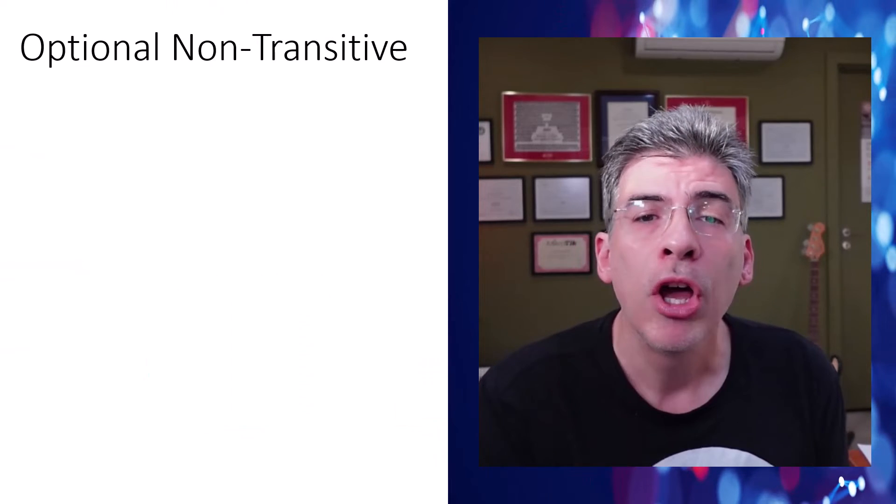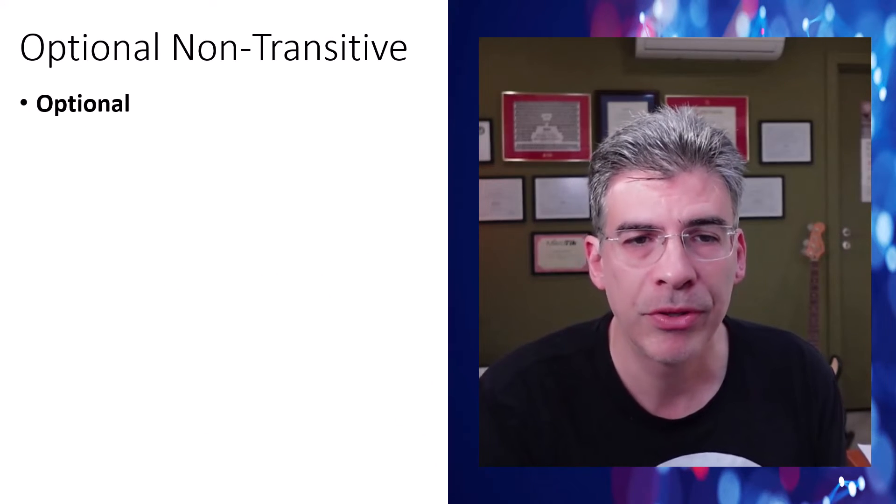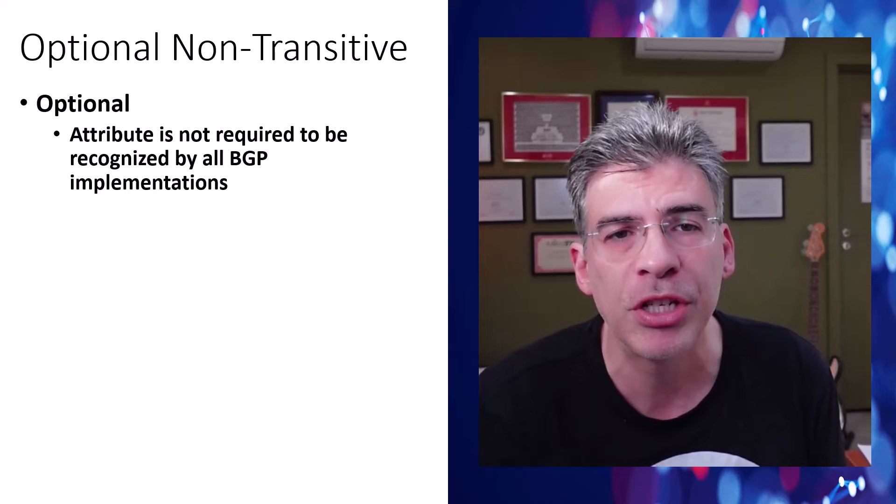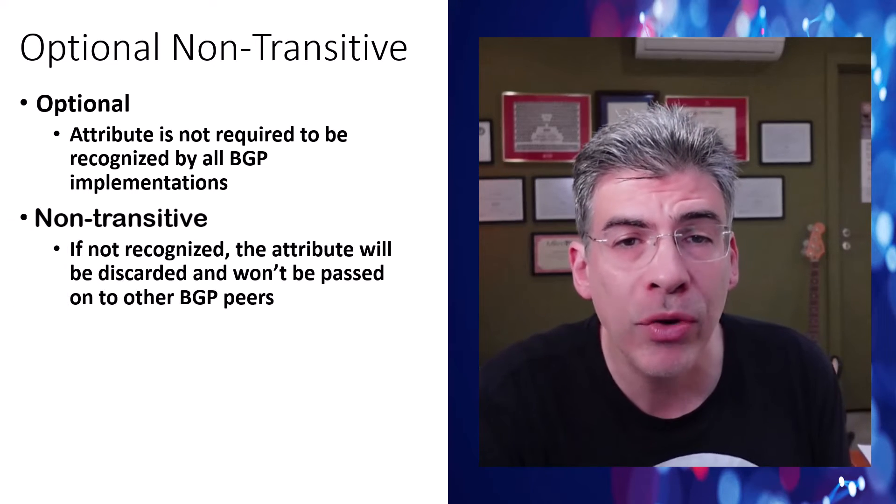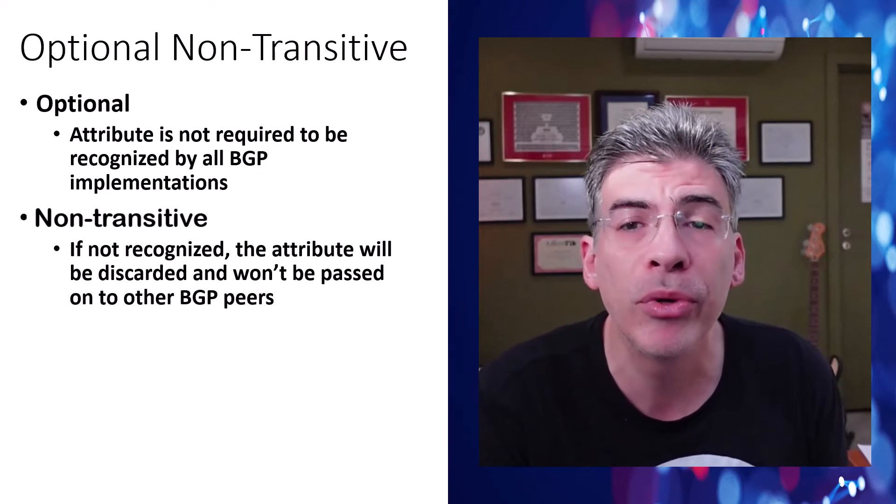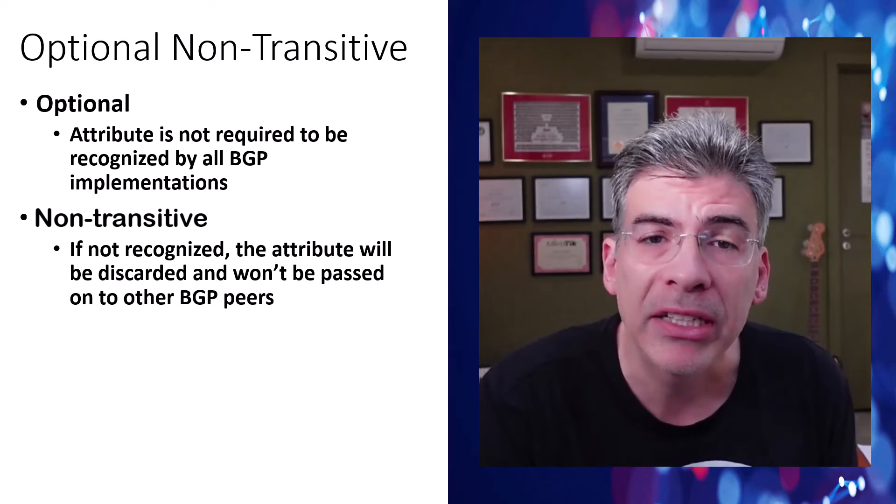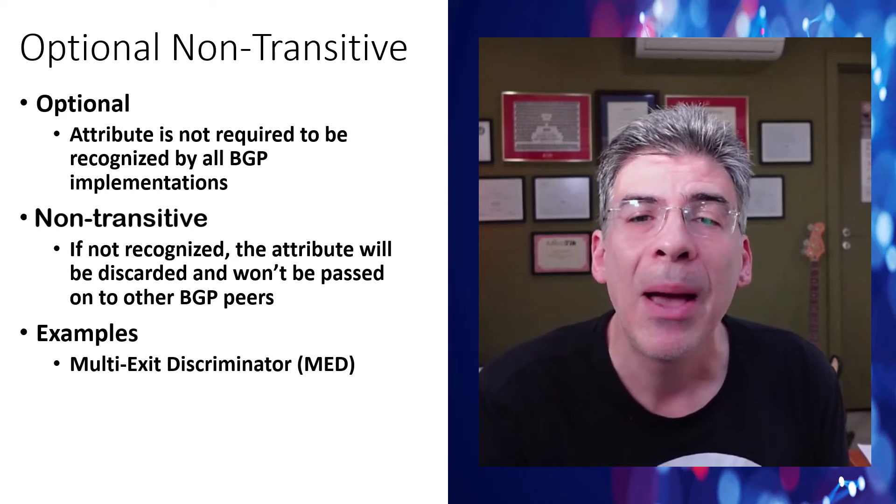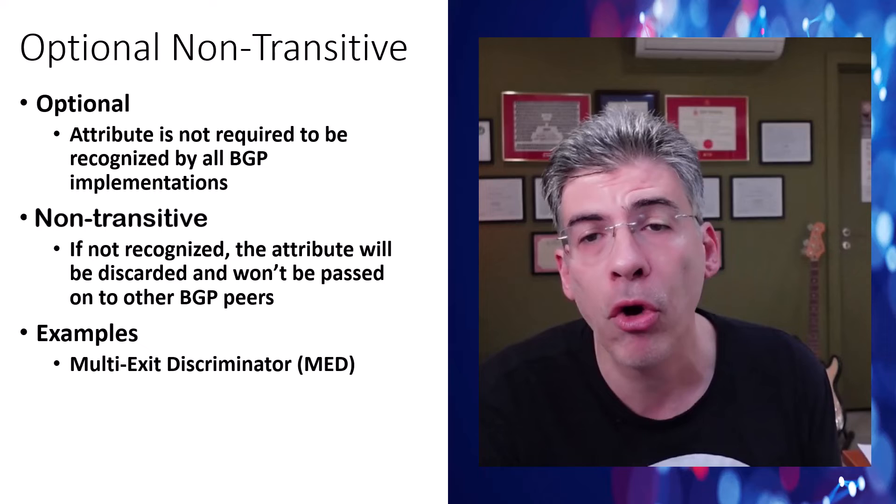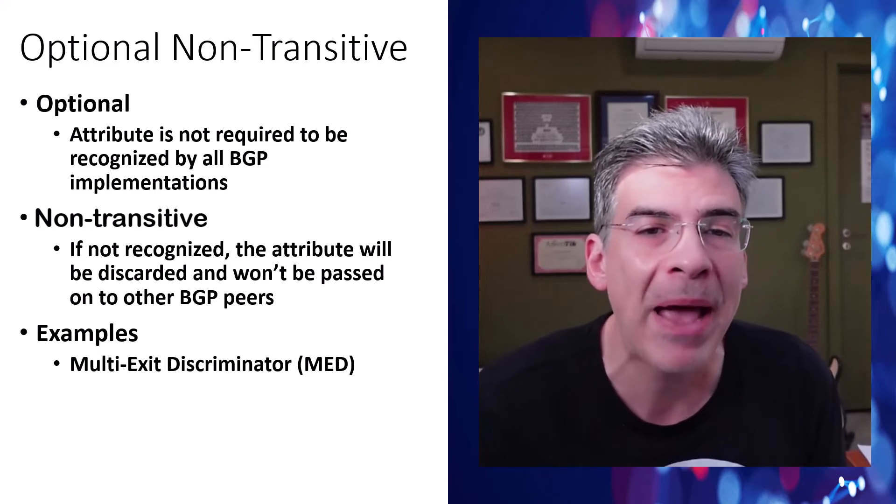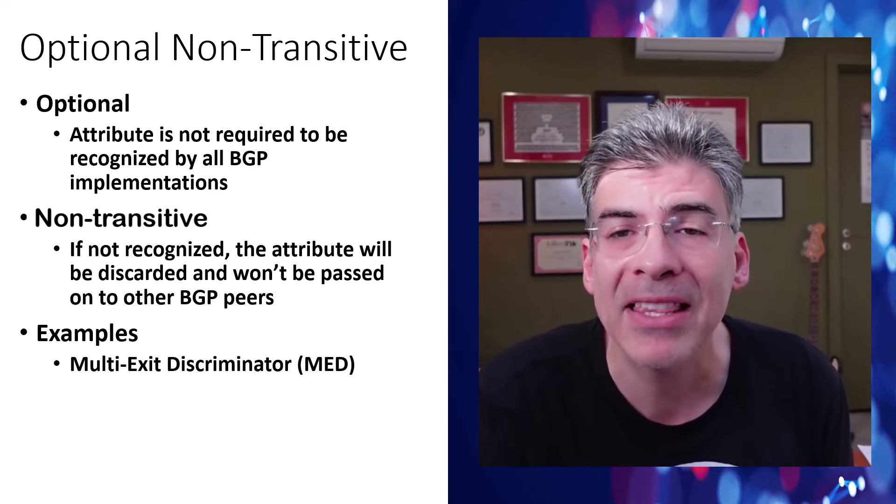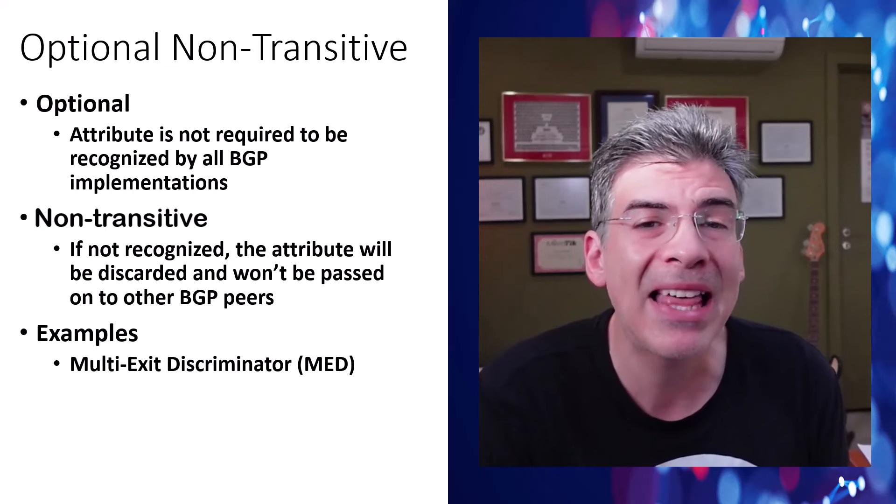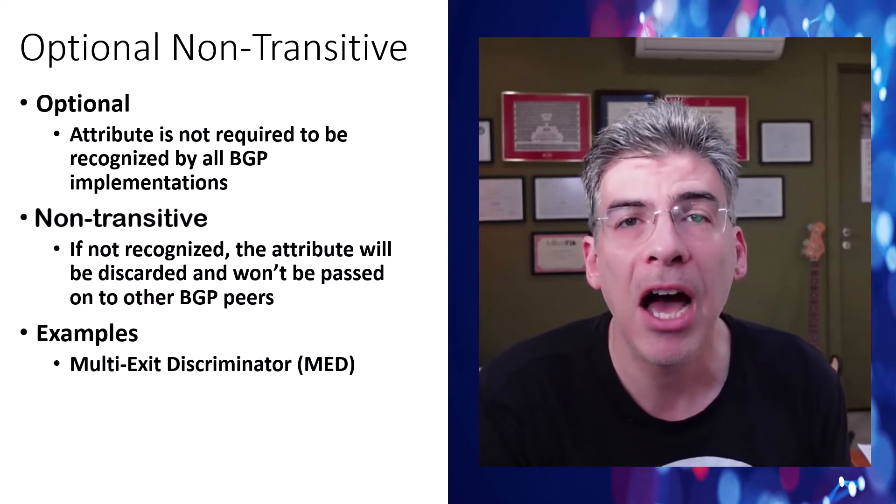Finally, we've come to our optional non-transitive attributes. Now, again, optional simply means that these attributes are not required to be recognized by all BGP implementations. However, the non-transitive aspect means that if a router doesn't recognize the attribute, it will discard it and it won't pass it on to other BGP peers. An example of such an attribute is the multi-exit discriminator or MED. This attribute suggests the preferred path to external neighbors when multiple paths exist to reach the same destination. It's used to influence the path selection in a way that doesn't affect other ASs.